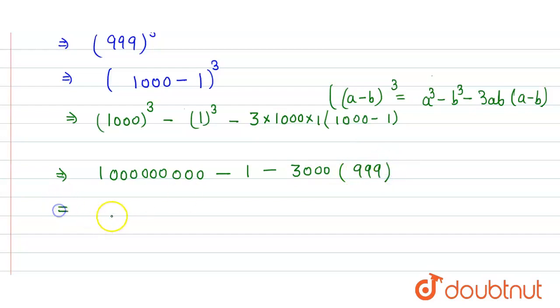So here we get is equal to 1,000,000,000 minus 1, here when we multiply these two here we get 2,997,000.